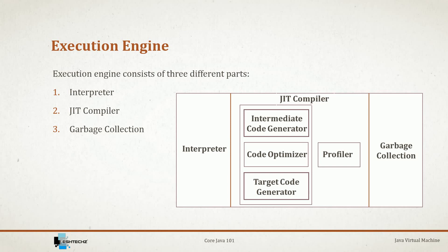The JIT compiler negates the interpreter's issues. Whenever code comes in with repeated calls, such code blocks are allocated to JIT, which then compiles the entire block into native code. This native code is executed directly, thus improving performance.